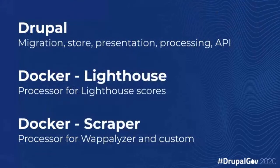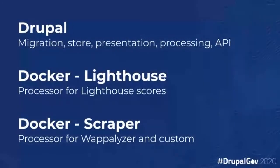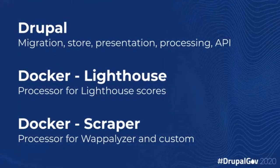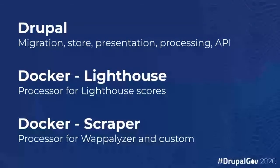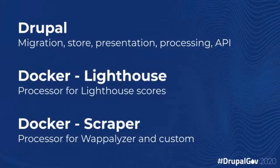How has all this been put together? It's been put together with Drupal, of course. We're using Drupal to migrate sites in from a spreadsheet. It's storing the data, analyzing the data, preparing statistics, doing the presentation layer, as well as providing an API to talk to the outside world. We have a couple of processes running in Docker containers — Node.js, Lighthouse doing the scores, and our little scraper which does Wappalyzer and some other custom things for the security.